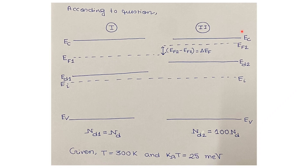According to the question, we consider two cases. In the first semiconductor, the donor concentration is ND and the Fermi level is EF1. In the second n-type semiconductor, the donor concentration is 100 times ND and the Fermi level is EF2. Since EF2 > EF1, we need to calculate the shift ΔEF = EF2 − EF1 at 300 Kelvin, where the thermal energy kBT = 25 milli electron volt.